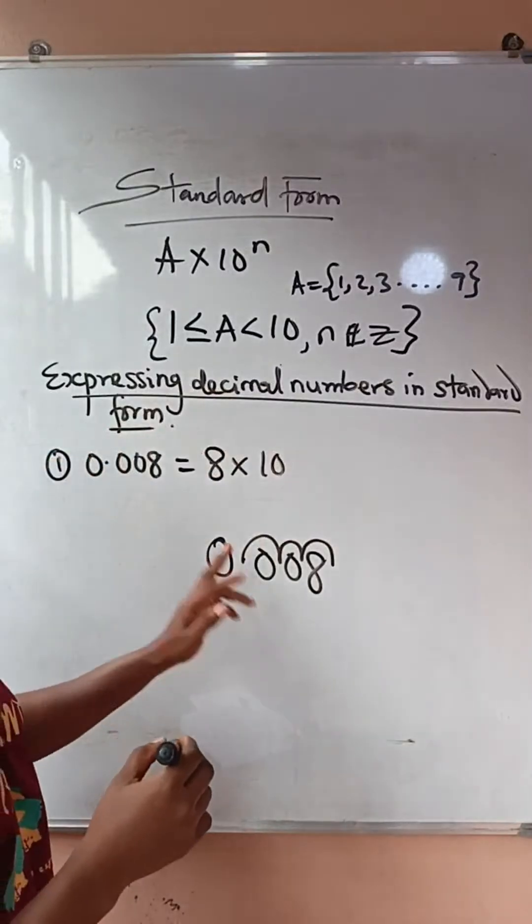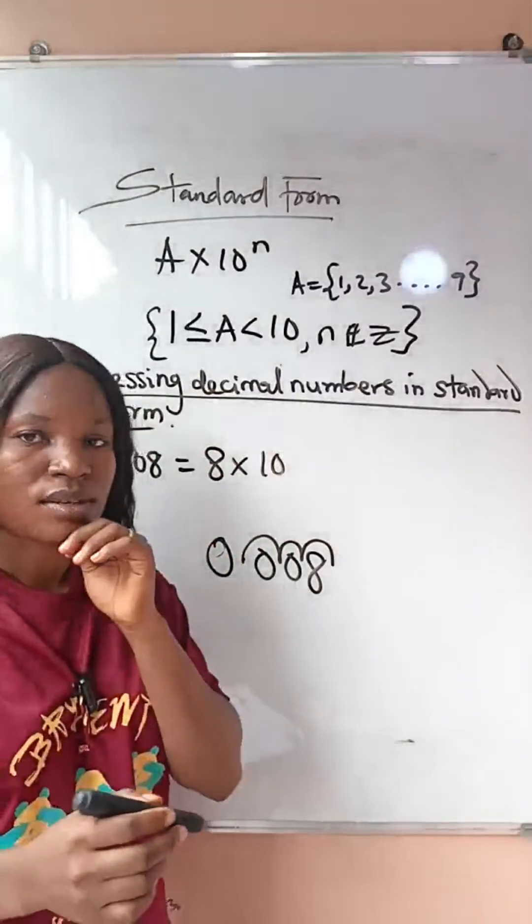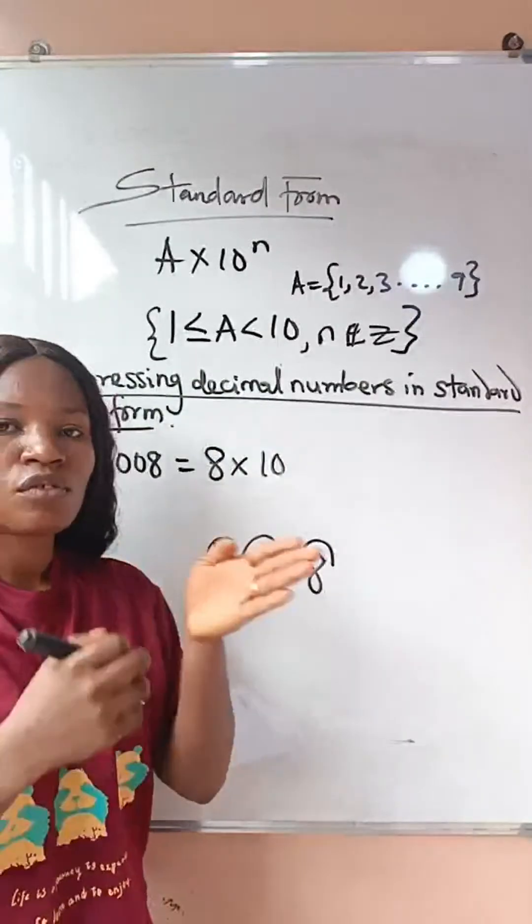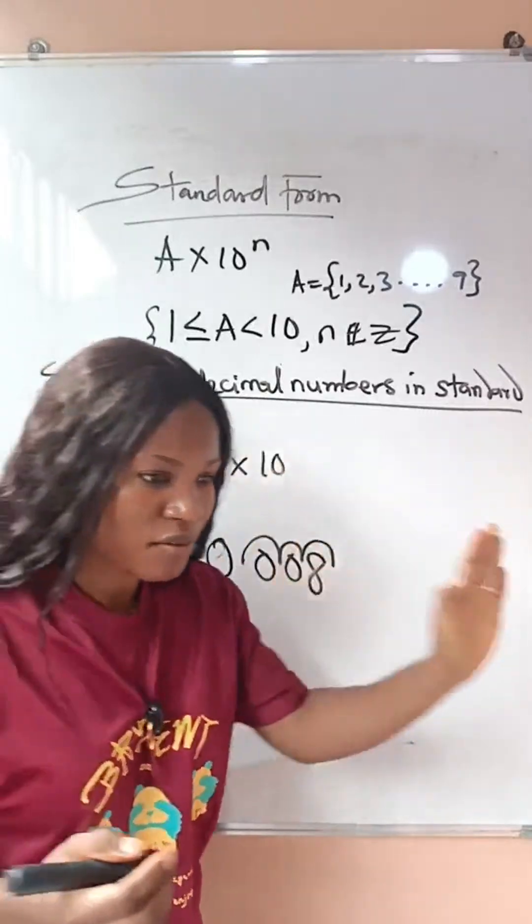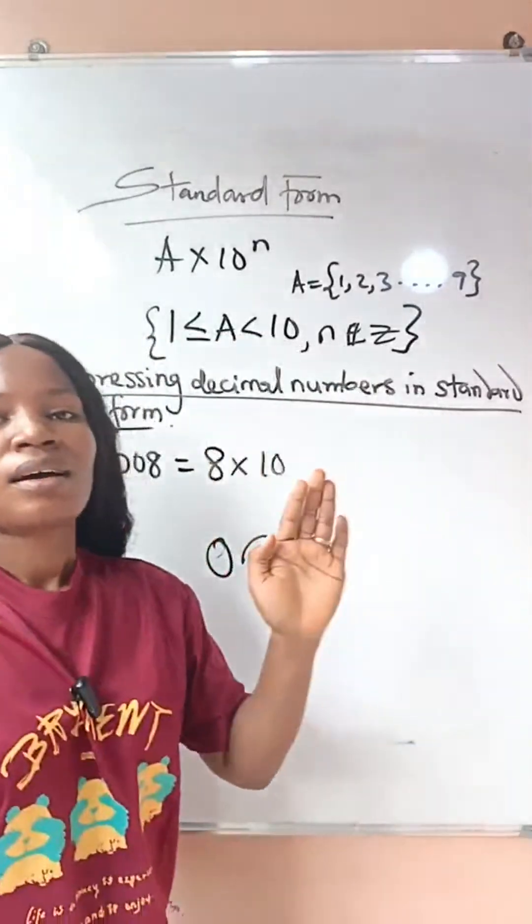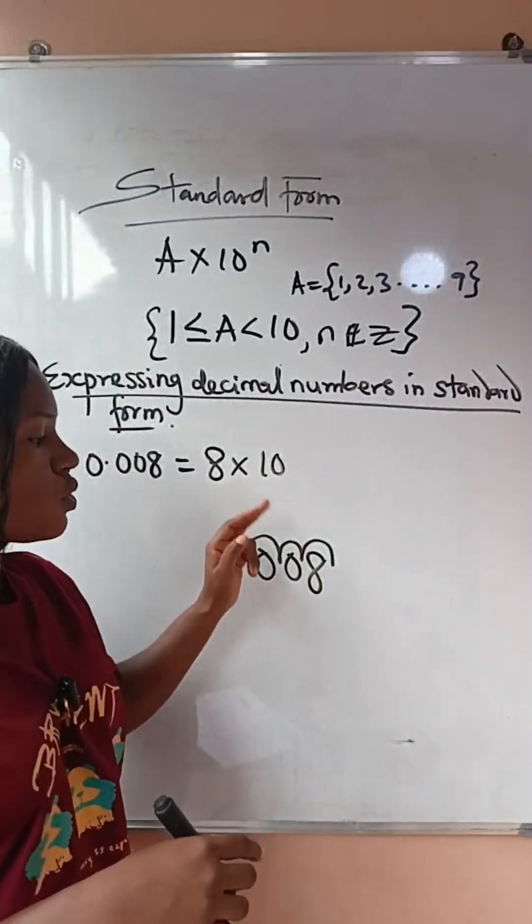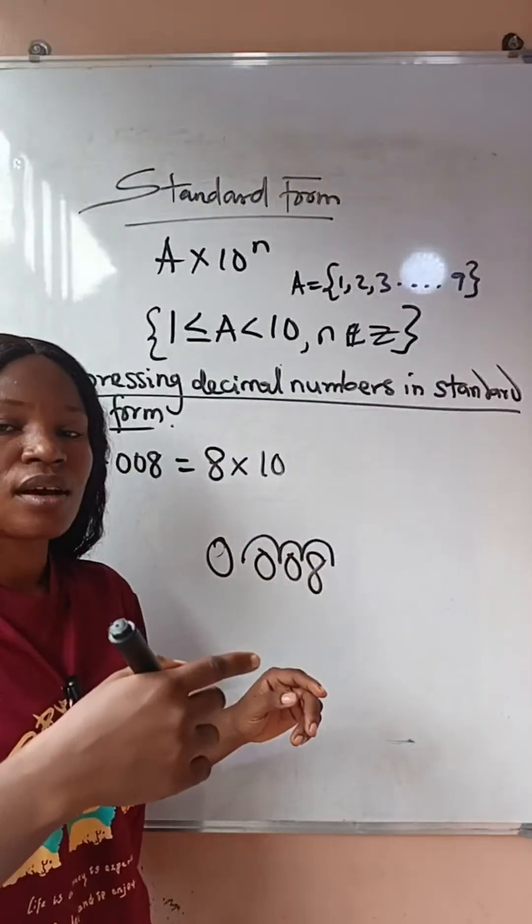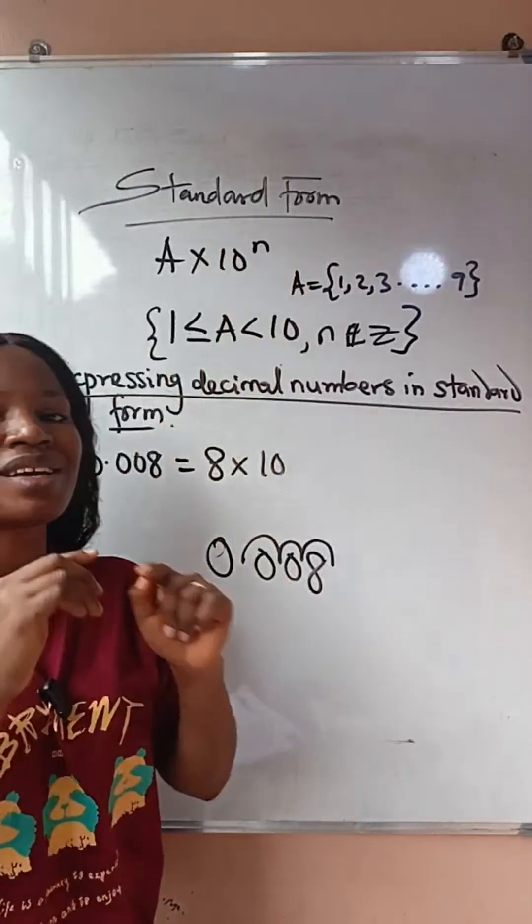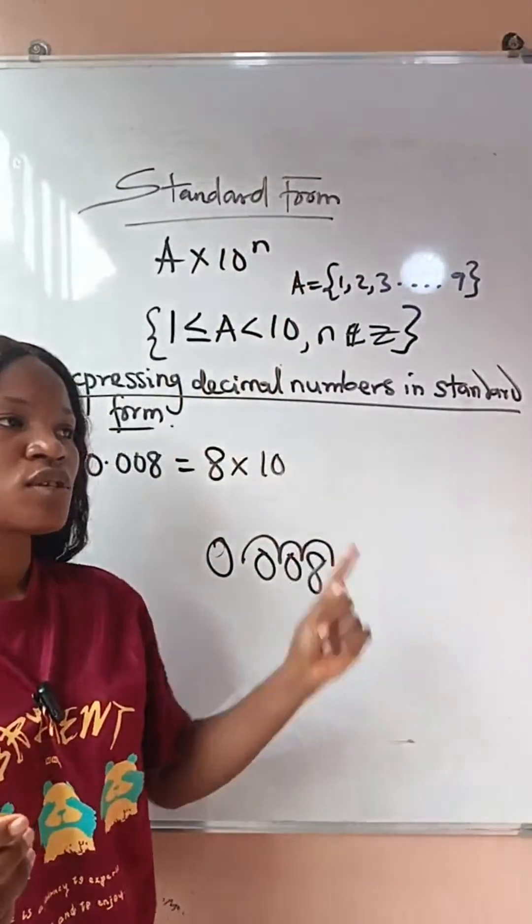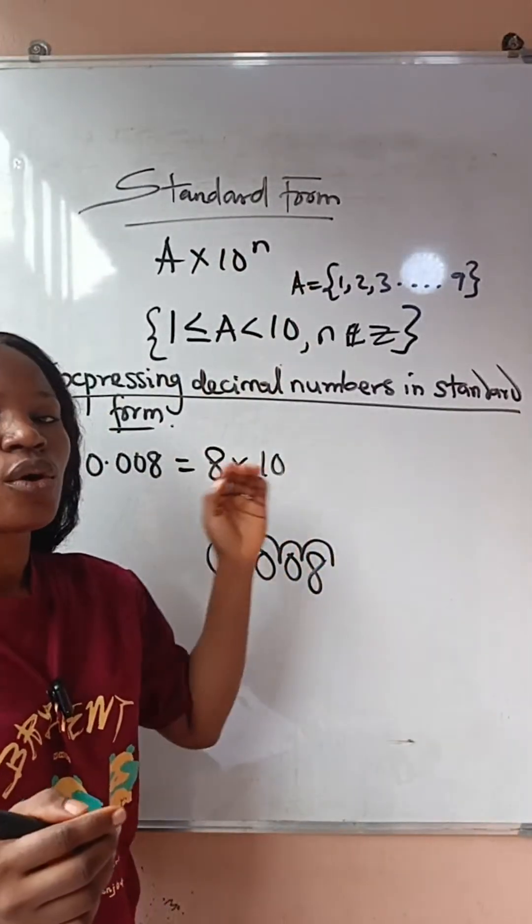Now remember what I told you when we started. I said that if you shift your decimal point to the right, your N will be, this N will be negative. But when you shift your decimal point to the left, your N will be positive.